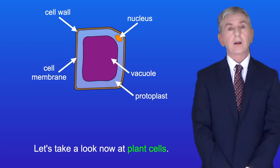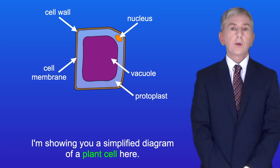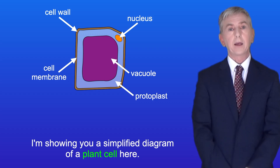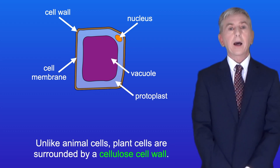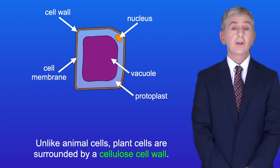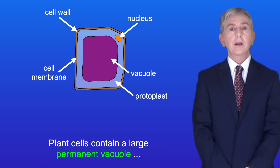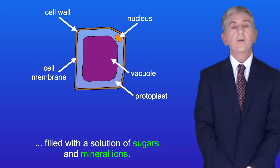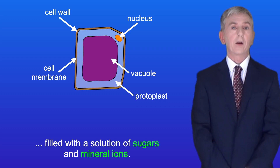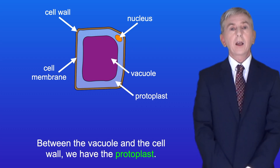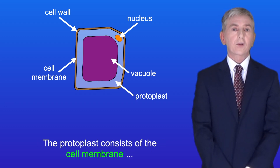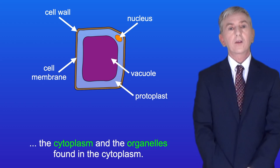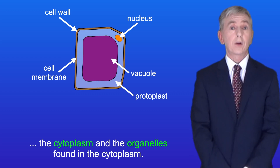Now let's take a look at plant cells. Here is a simplified diagram of a plant cell with all organelles omitted apart from the vacuole and nucleus. Unlike animal cells, plant cells are surrounded by a cellulose cell wall, and plant cells contain a large permanent vacuole filled with a solution of sugars and mineral ions. Between the vacuole and the cell wall we have the protoplast, which consists of the cell membrane, the cytoplasm, and the organelles found in the cytoplasm.